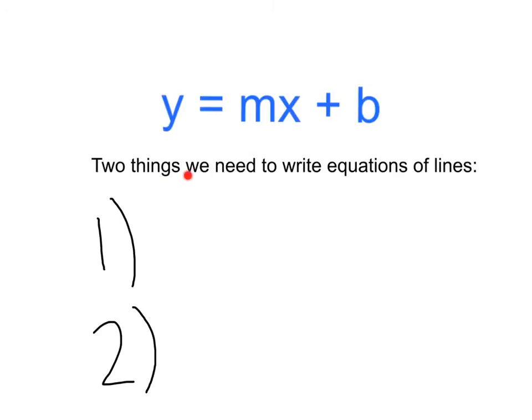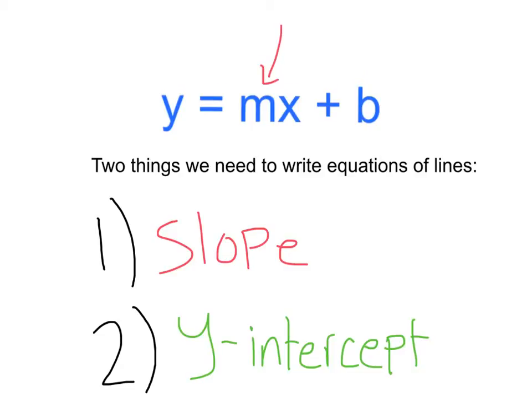Now there are two things that we're going to need to be able to write equations of a line. The first is the slope, or our m value. Second, the y intercept. In our y intercept form, that is represented by our b. Once you get these two things, you just plug them in and you've got yourself an equation of a line.